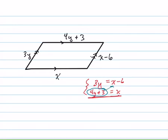I'll rewrite this as 3y equals x minus 6. And when I write x, instead of writing x, I'm going to write 4y plus 3. When I do that,